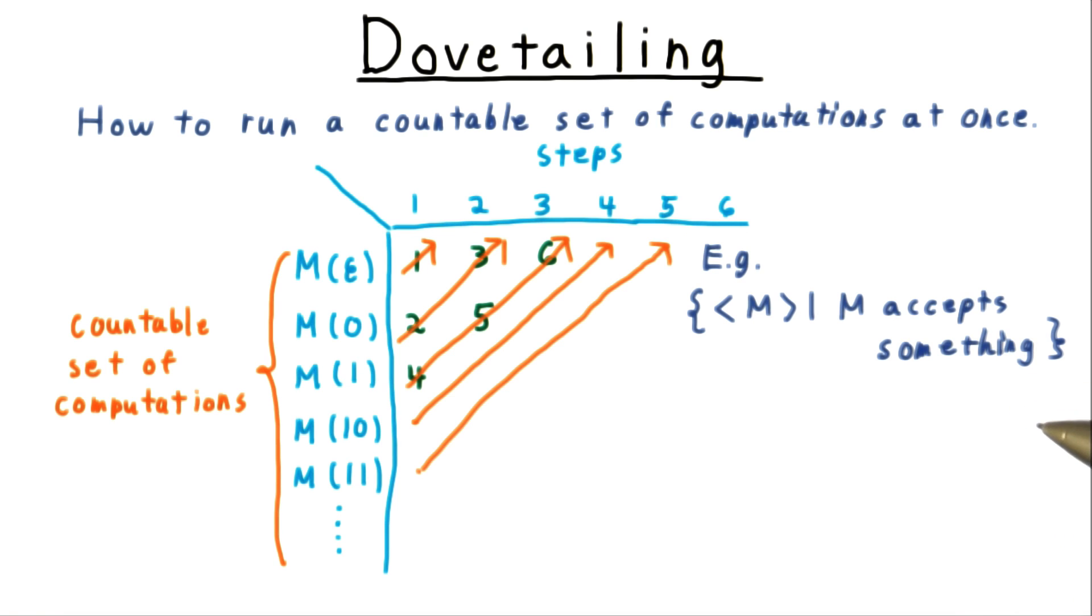Thus, if we're trying to recognize the language of Turing machine descriptions, where the Turing machine accepts something, then a Turing machine in this language must accept a string after some fixed finite number of steps. Say that configuration appears here in the table. Well, then we'll eventually reach it with the dovetailing strategy, and we can accept.